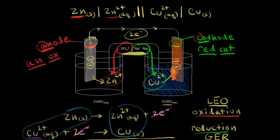This shorthand notation is just a compact way of representing a voltaic cell. Instead of drawing the full picture, when you see this notation written in a chemistry textbook, it conveys the same information as the detailed diagram.